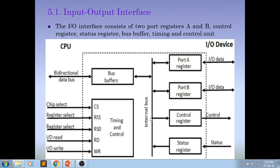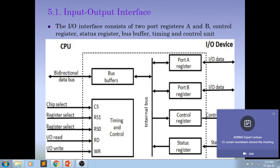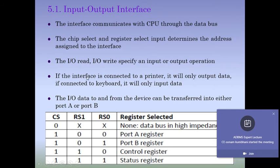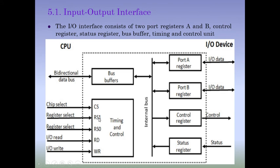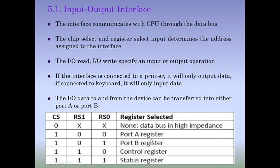This is the interface connected between the processor and external devices, providing communication between them. If a particular interface's chip select pin gets value 0, that interface will remain idle. Only when the chip select value is 1 can the microprocessor select one of the registers. With RS0 and RS1 both at 0-0, Port A register is selected; 0-1 selects Port B; 1-0 selects Control register; and 1-1 selects Status register.